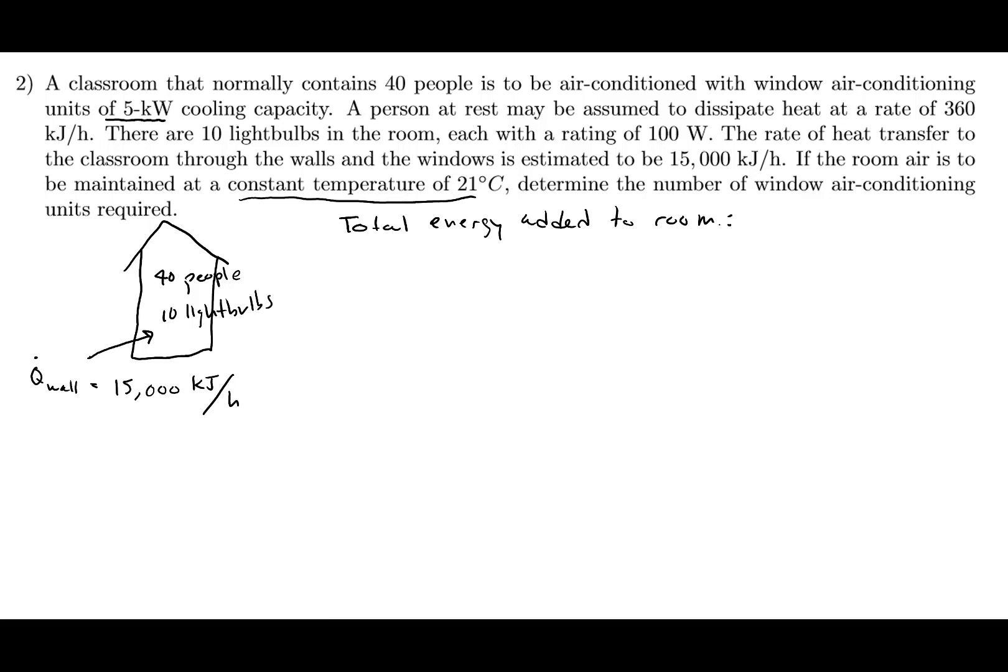First of all, we already know that Q wall is equal to 15,000 kilojoules per hour. I'm going to convert, since the cooling capacity of the air conditioner is 5 kilowatts, I'm going to convert all of my units into kilowatts. So basically I need to convert this hour to seconds.